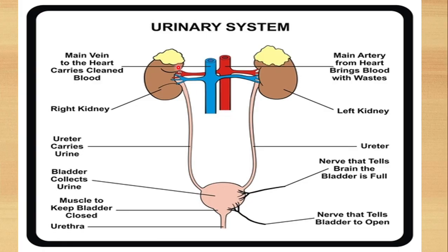Starting with the main urinary system, here are two kidneys. As you know, the kidneys are bean-shaped organs, and every human being has two kidneys — one on the left side and one on the right side. One thing to remember is that the kidney on the right side is slightly lower compared to the kidney on the left side, because of the presence of the liver. The liver is a very large organ and it pushes the right kidney slightly lower.